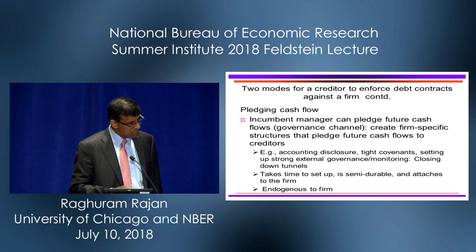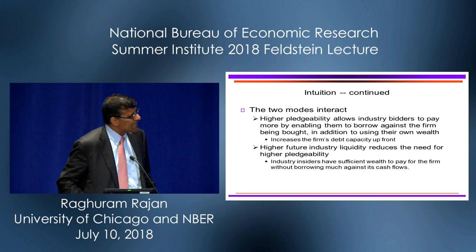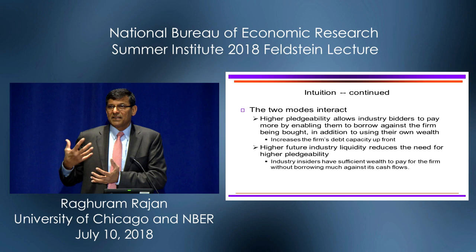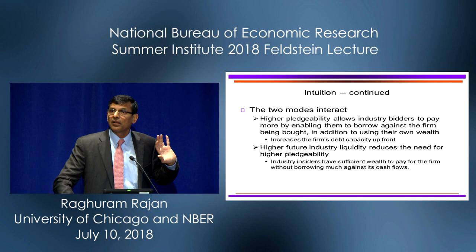Now, the two modes interact. Essentially, if somebody can borrow against the firm itself in making a bid for the firm, they can actually pay more for the firm. So, an industry insider with plenty of wealth, who can also borrow against the firm when bidding, can pay more. The ability to pledge cash flows of the firm can add up to industry wealth to allow for greater borrowing capacity.